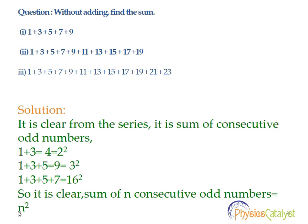Part 2 is 1 plus 3 plus 5 plus 7 plus 9 and so on, and Part 3 is similar. For these types of questions we need to look at the symmetry. The first observation is that they are all the sum of consecutive odd numbers.